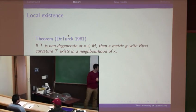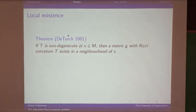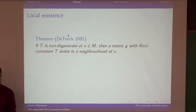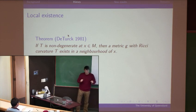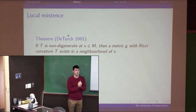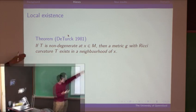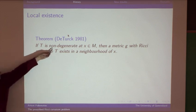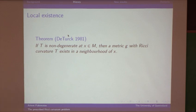The local existence of solutions to the prescribed Riemannian curvature problem is relatively well understood. There's an old theorem by Duterk — proved in his thesis in the late 70s, early 80s — which tells you exactly this: if you're on a manifold and you have your tensor, and at some point X your tensor is non-degenerate, given by a non-degenerate matrix, then in a neighborhood of that point you can find a Riemannian metric whose Ricci curvature coincides with T.